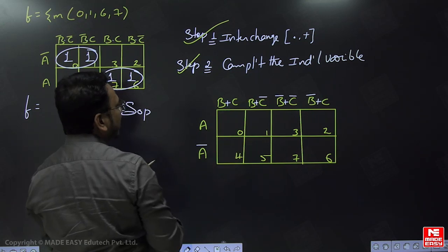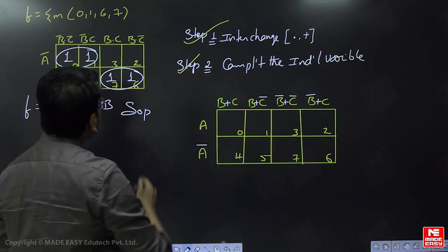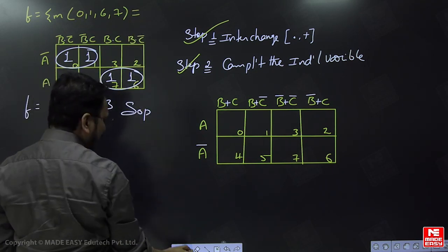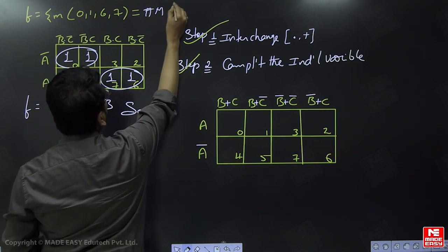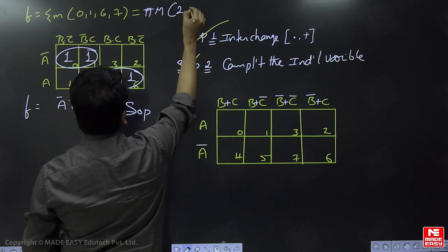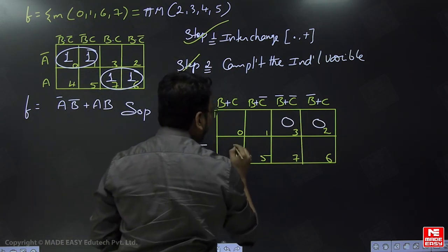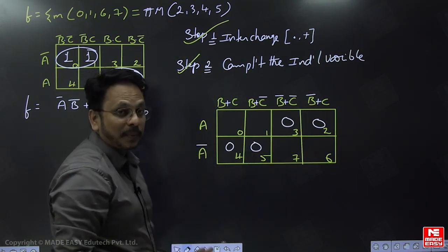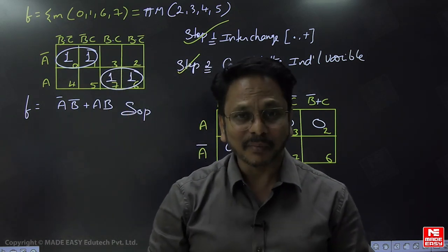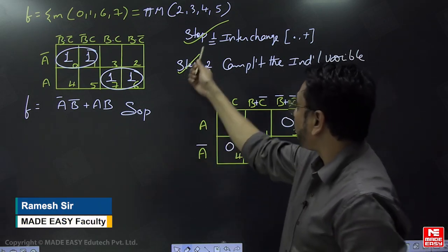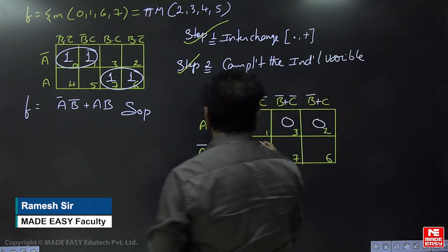Now the K-map is ready with these two changes applied. Here, sigma small m has to be converted into pi capital M — that is the POS form. The minterms are 0, 1, 6, 7, so the maxterms become 2, 3, 4, 5. Those cells 2, 3, 4, 5 are represented as zeros in the K-map, because we are dealing with maxterms pi capital M.